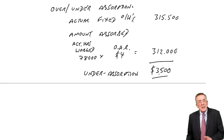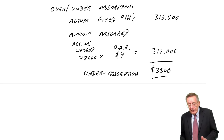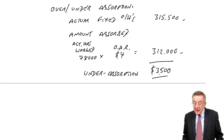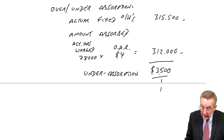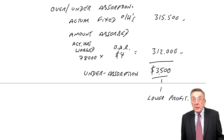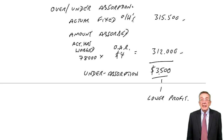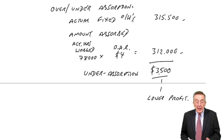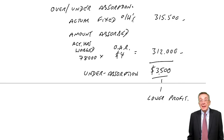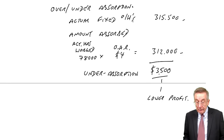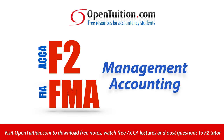What effect would it have on profit? Because we hadn't absorbed enough — we only got $312,000 and need an extra $3,500 — the extra cost would mean lower profit. So make sure you've got that. Do go back and do a full statement in February if you need, because it's vitally important — you're bound to get asked about over and under absorption. And because that's a problem with this method of costing, you'll see in the next chapter there's an alternative approach — marginal costing — which in a sense avoids that problem.